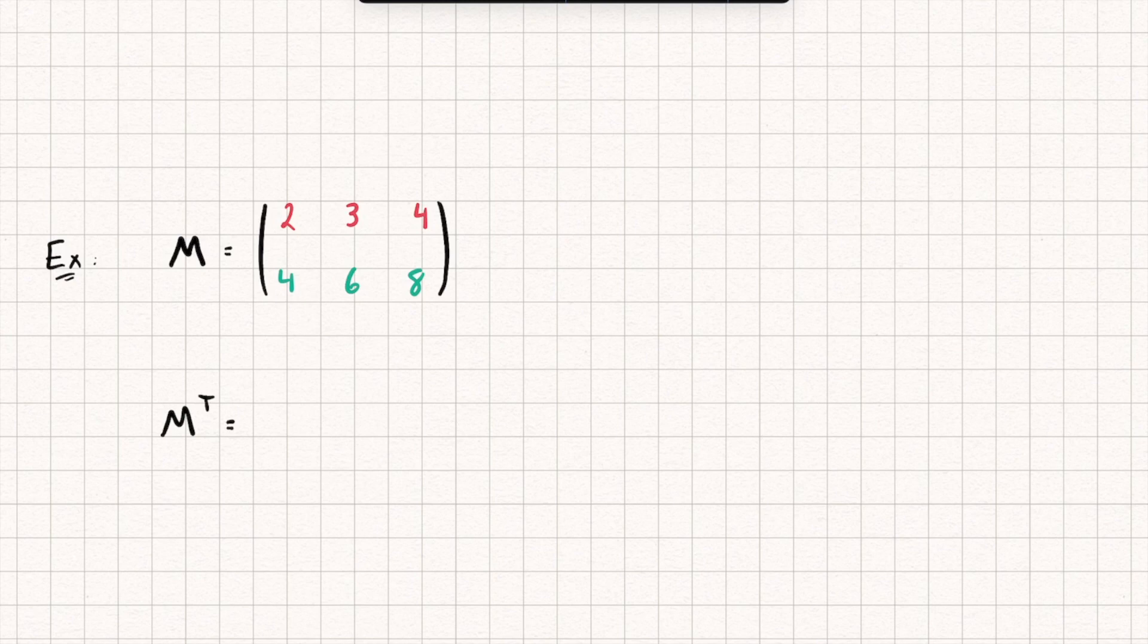Well, the columns of M transpose, so the columns like this, they're just going to be the rows of our matrix M. So the first column is going to be 2, 3, 4. And my second column is going to be 4, 6, 8, like this. And you can see we've now calculated M transpose.